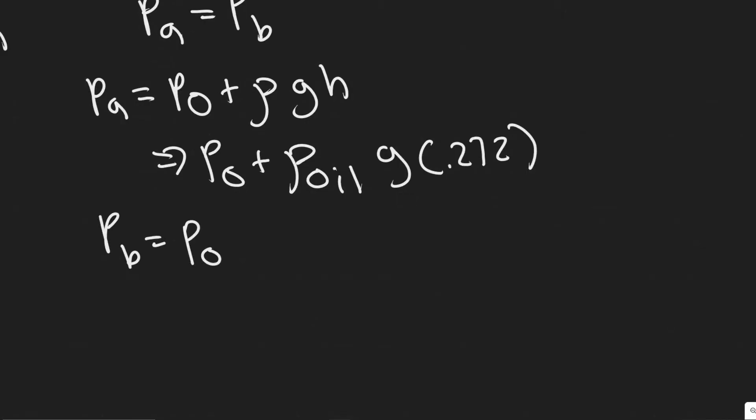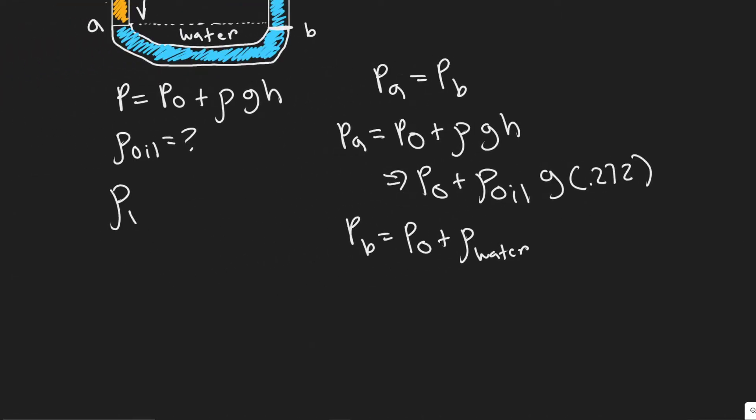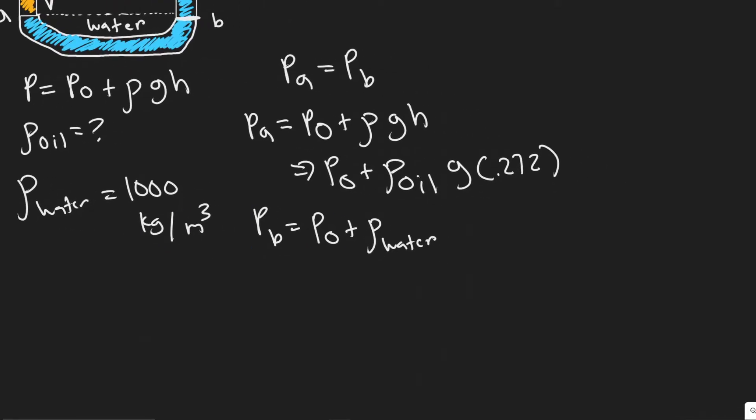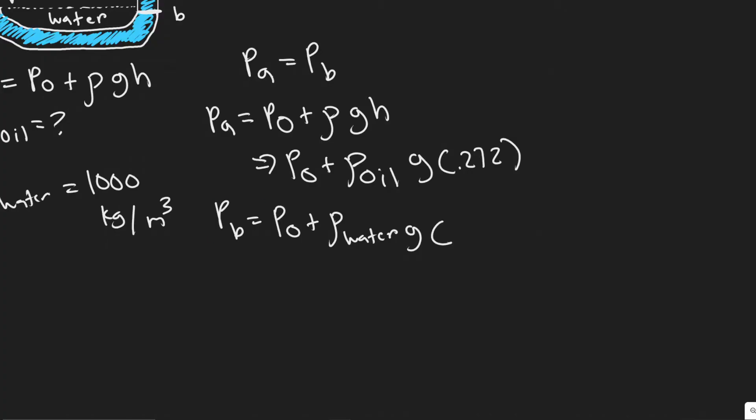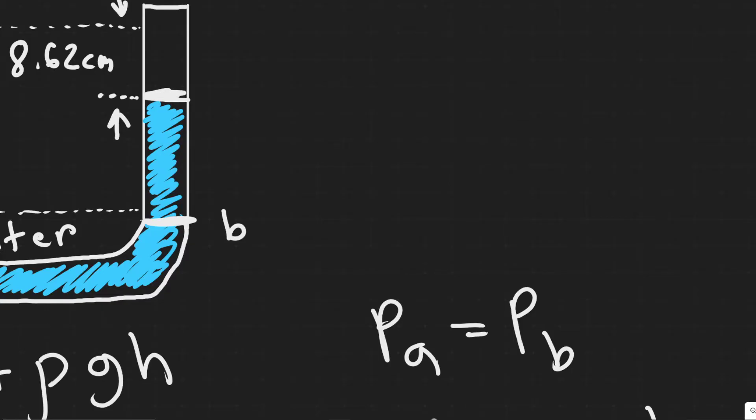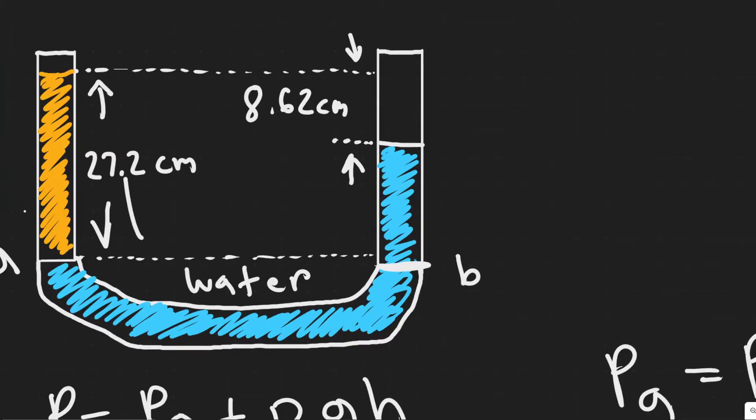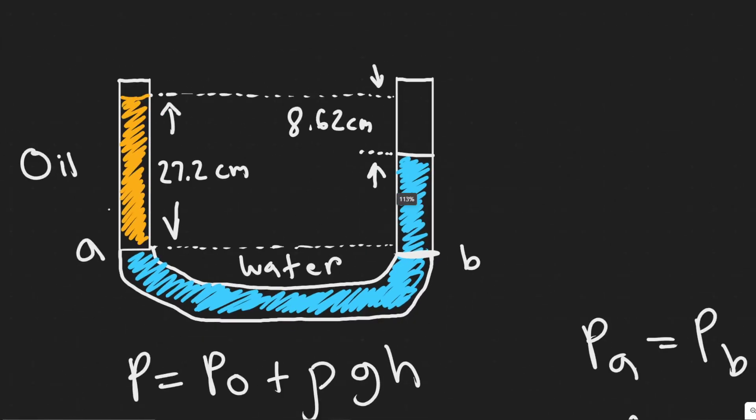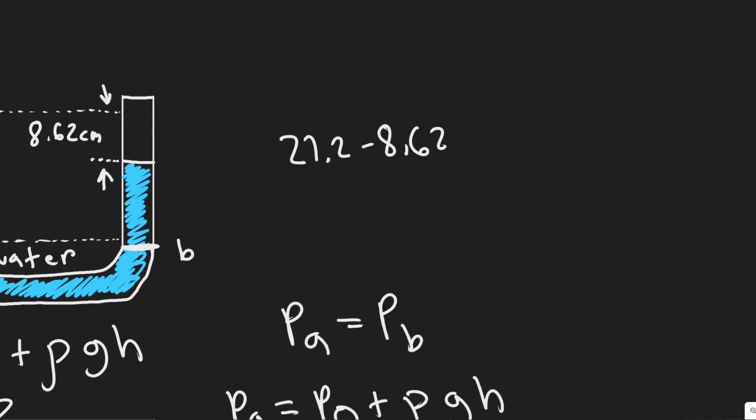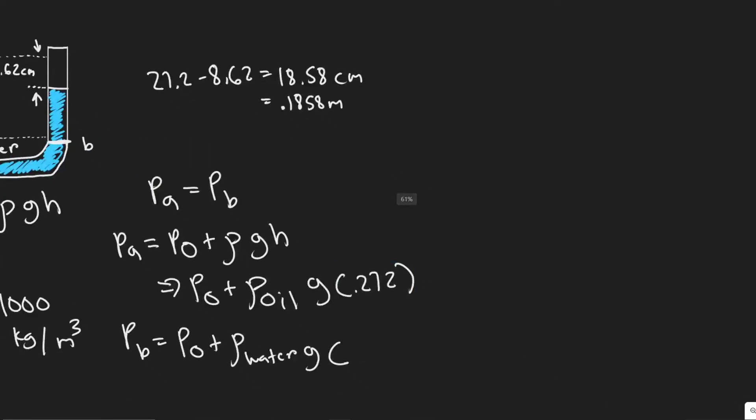Now let's do the pressure at b. So once again, you have p zero plus the rho of water this time. And so that's just the constant value. You should know that or you need to know it. It is 1,000 kilograms per meter cubed. So that's the density of water. And then we have g. And then once again, we have to do the height. So what is the distance from here to the free surface right here? We know this whole distance is 27.2. And then this little distance is 8.62. So if we subtract this number from this number, that'll give us this distance right here. So we have 27.2 minus 8.62. Let me go ahead and plug that in. You get 18.58. Keep in mind, this is centimeters. So you would divide by 100, 0.1858. This is now in meters.